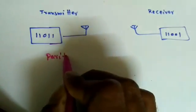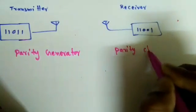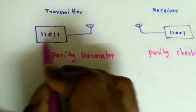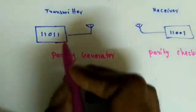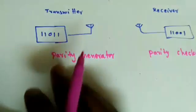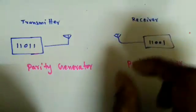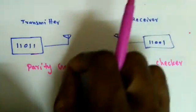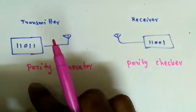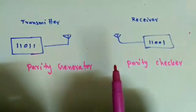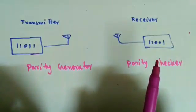On the transmitting side we use the parity generator, and on the receiving side the first block will be the parity checker. Apart from the message bits, we add some extra bit as a parity bit — either even parity or odd parity. When receiving, we check the parity: if we sent even parity but receive odd parity, there is an error, and it will signal the transmitter to resend the data.